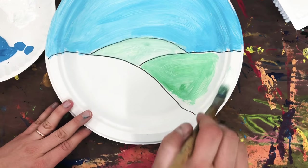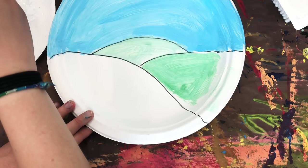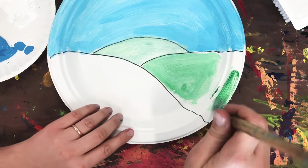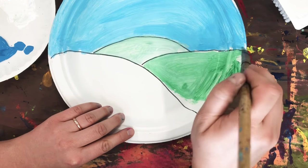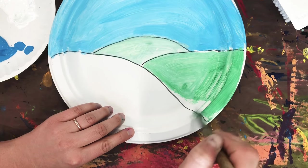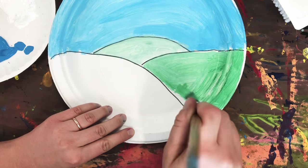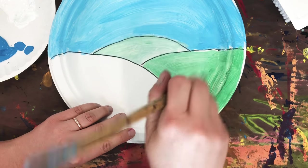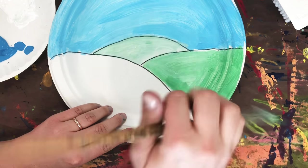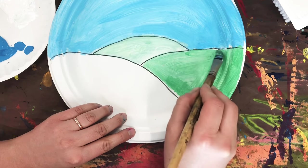I'm going to get a little bit more white paint and then some more green paint, and I'm going to mix them together. So having these different values of green is going to make it look like this hill is farther away than this hill, and that is perspective.